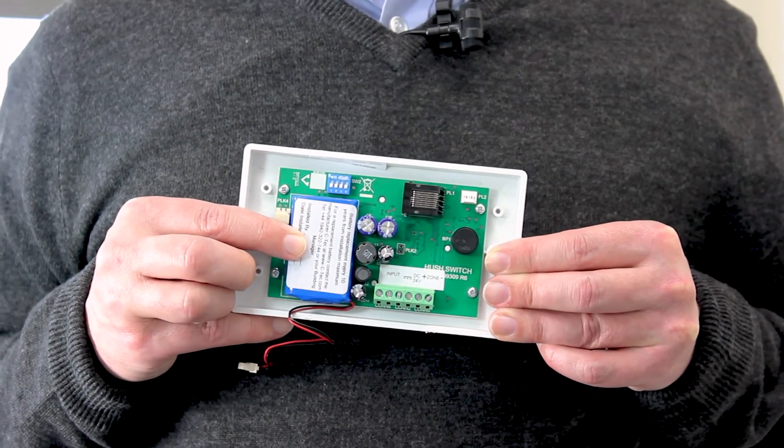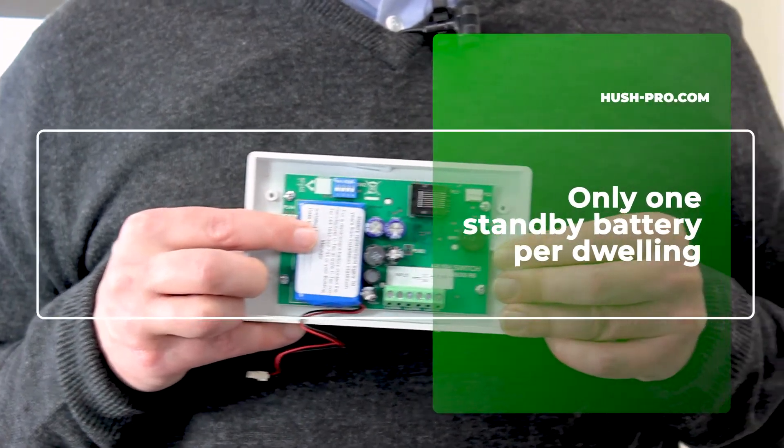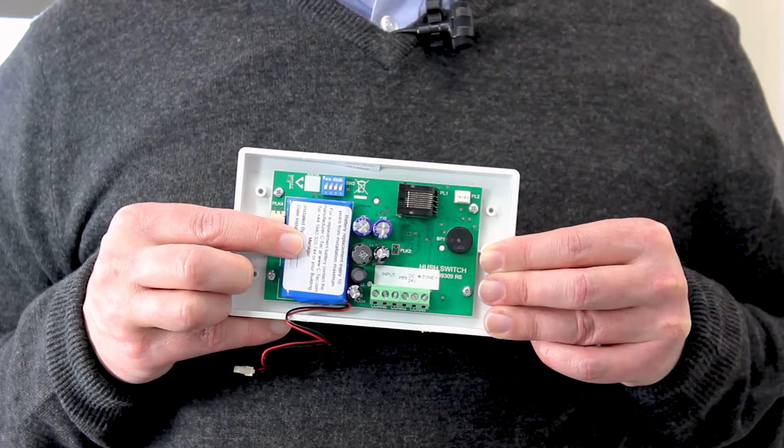This battery is capable of powering all of the dwelling's devices should the mains fail, meaning the system is very environmentally friendly compared to other systems which typically have a battery in every device.